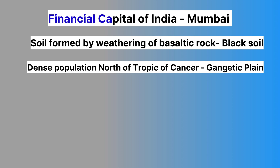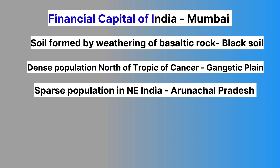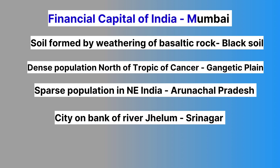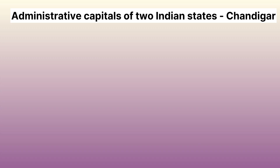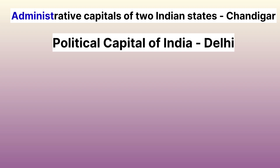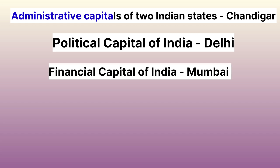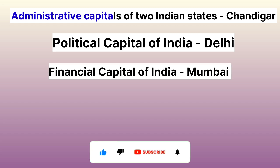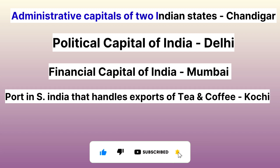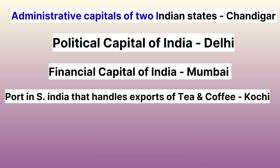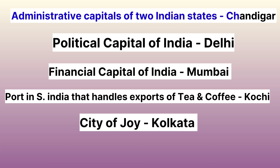The area of dense population north of the Tropic of Cancer is the Gangetic Plain. The area of sparse population in Northeast India is Arunachal Pradesh. The city on the banks of River Jhelum is Srinagar. Chandigarh serves as the administrative capital of two Indian states. The political capital of India is Delhi. The port in South India that handles exports of tea and coffee is Kochi. The city of joy is Kolkata.